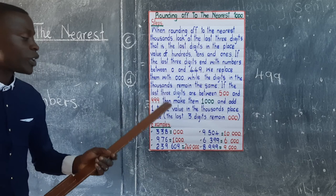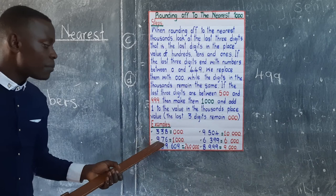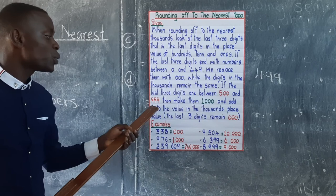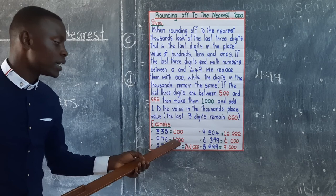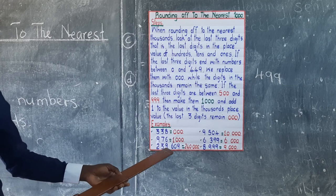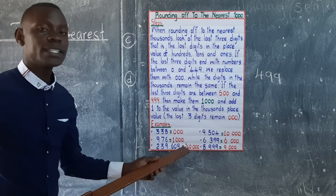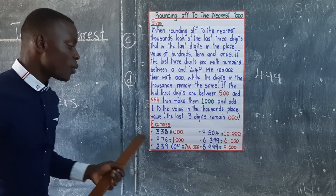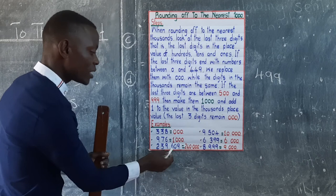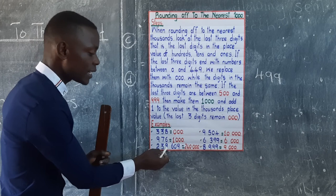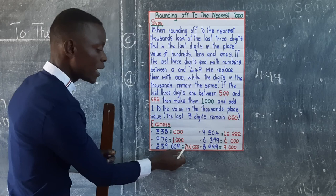976 is more than 500 — it is between 500 to 999 — so its value is 1,000, and 976 rounds to 1,000. For 239,609, the last three digits are 609, which is more than 500. The value is 1,000. Write 0 for 9, maintain 0, write 0 for 6, add 1 to 9 giving 10, write 0 and add 1 to 3 giving 4, maintaining 2. Answer: 240,000.